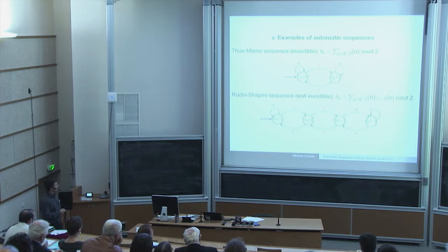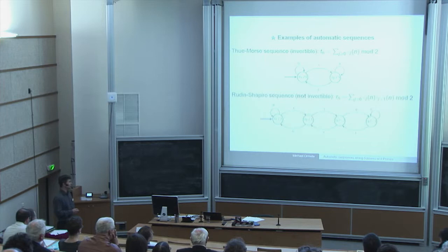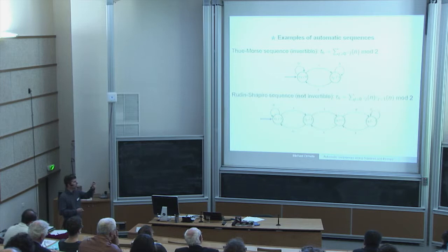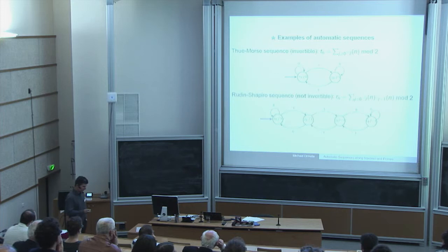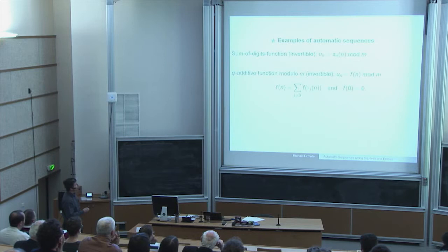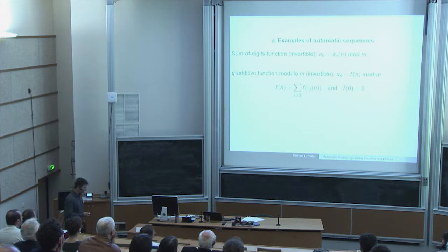Another famous automatic sequence is the Rudin-Shapiro sequence — it turns out to be non-invertible. It can also be written in terms of the binary expansion: you count consecutive blocks of the form 1-1. If the number of 1-1 blocks is even, the Rudin-Shapiro sequence is zero; otherwise it is one. The sum of digits mod M is an invertible automatic sequence.